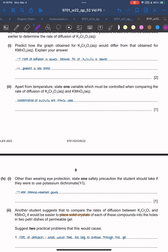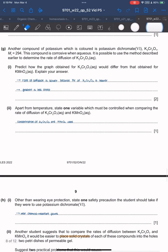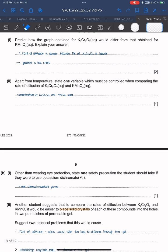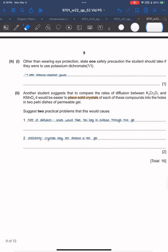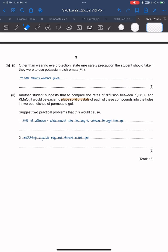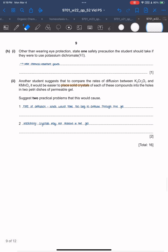Apart from temperature, state one variable that must be kept controlled when comparing rate of diffusion of dichromate versus manganate: concentration of K₂Cr₂O₇ and KMnO4 used. Other than wearing eye protection, state one safety precaution the student should take if using potassium dichromate. It is stated that potassium dichromate is corrosive, so wear chemical resistant gloves just in case it spills to prevent burns.